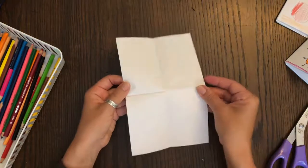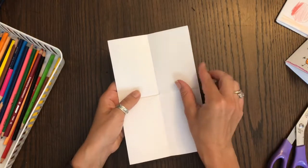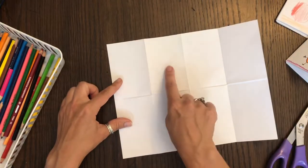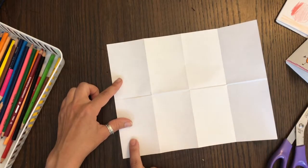So now when I open the paper up you're going to see that we've created eight different rectangles with the folds in the paper. One, two, three, four, five, six, seven, eight.